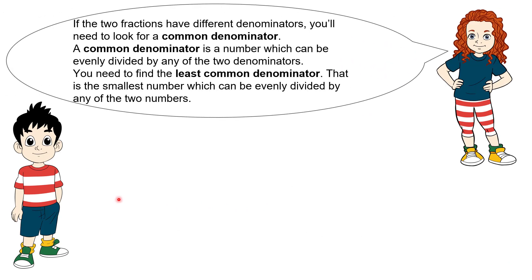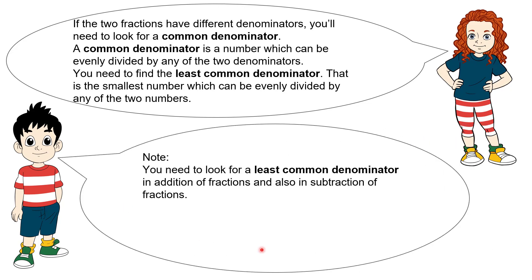If the two fractions have different denominators, you'll need to look for a common denominator. The common denominator is a number which can be evenly divided by any of the two denominators. You need to find the least common denominator — that is, the smallest number which can be evenly divided by both numbers. Note that you need to look for the least common denominator in addition of fractions and also in subtraction of fractions — so it's not only in addition.